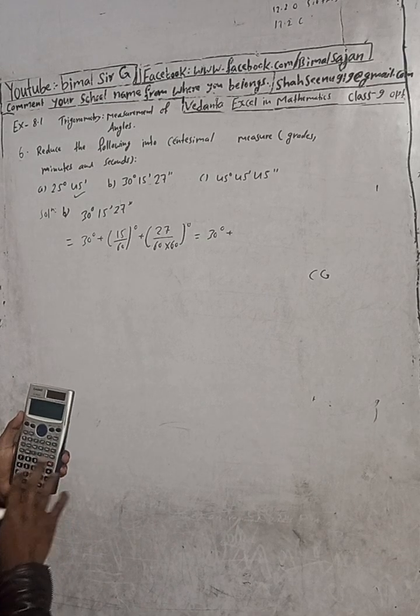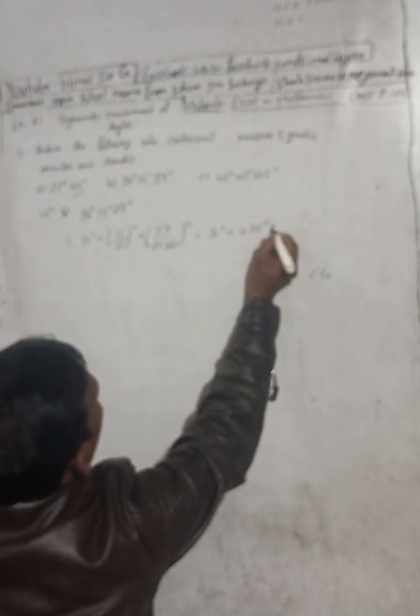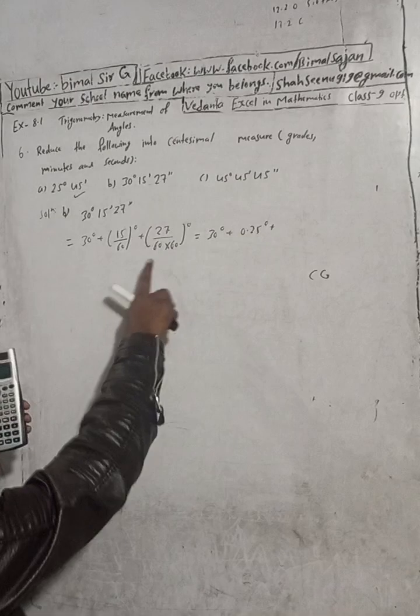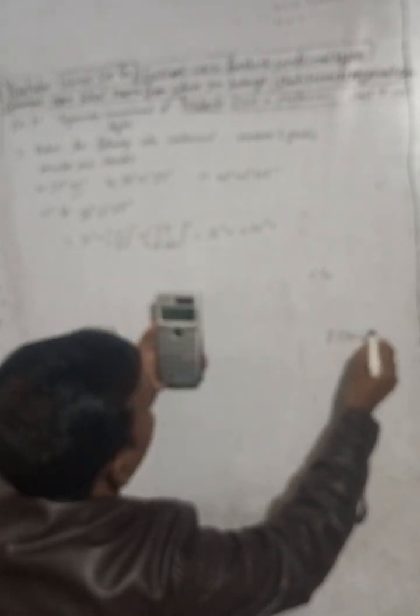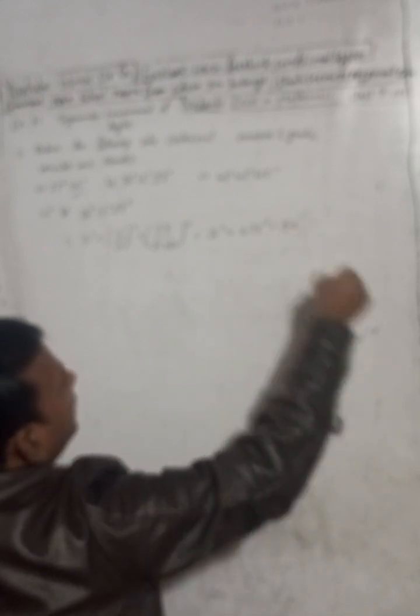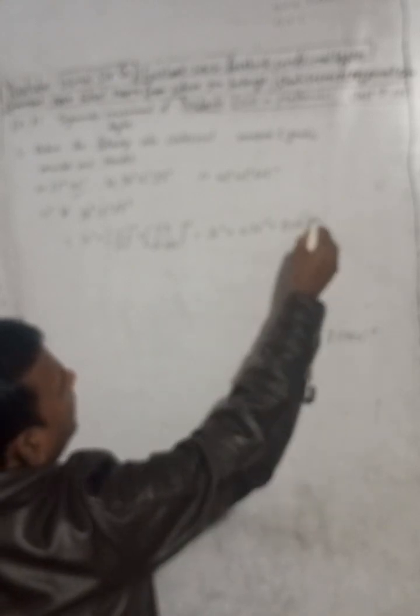So we take 15 divided by 60, which gives 0.25 degrees, plus 27 divided by 60, then divided by 60 again to convert seconds to decimal degrees.